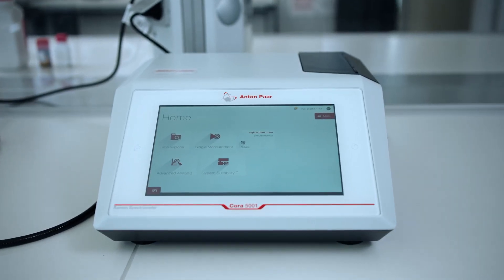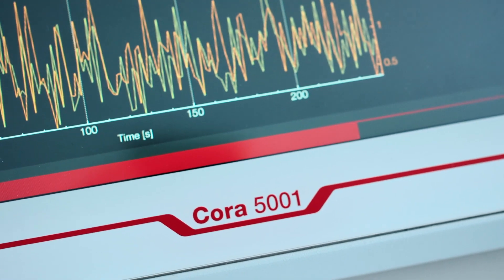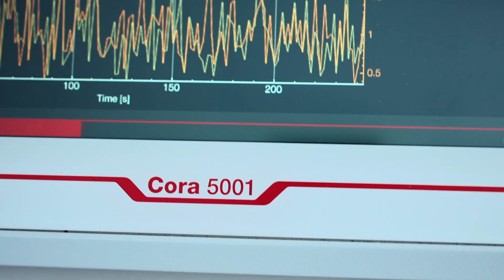The Anton Parr Raman Spectrometer Cora 5001 is a powerful tool to analyze chemical substances and monitor their reactions.